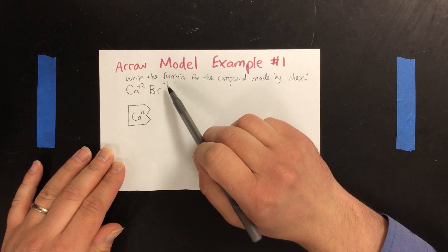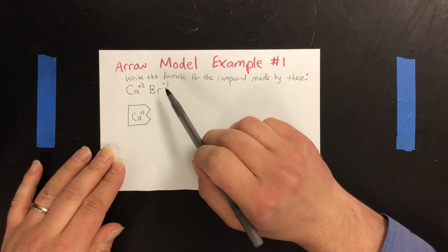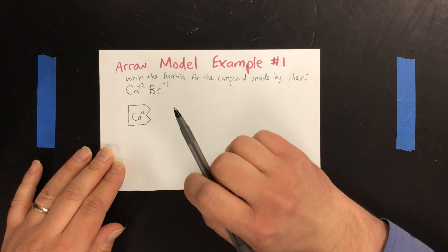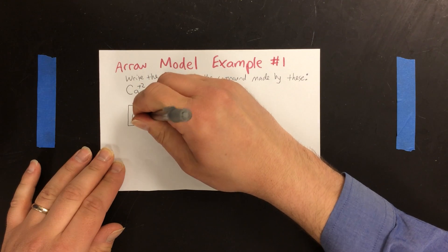And then for bromine, because it has a charge of minus one, I need to draw a piece with one notch in. One.